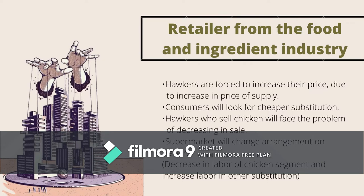Hawkers in the market will increase their chicken selling price. As supply prices rise, consumers will be forced to spend more and will start seeking substitutes like beef, mutton, and lamb. Hawkers who sell chicken for a living will face decreasing sales due to lower purchasing power. Butchers in supermarkets like Lotus, Eon, or NSK will also need to adjust their labor arrangement — managers may reduce butchers from the chicken segment and increase labor in other meat sectors as people seek substitutes.